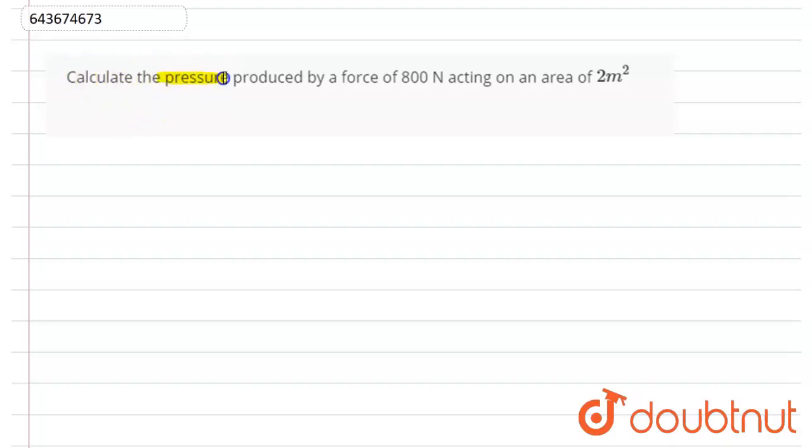the pressure produced by a force of 800 Newtons acting on an area of 2 meter square. So let us write what we are given. We are given force, which is equal to 800 Newtons, and then